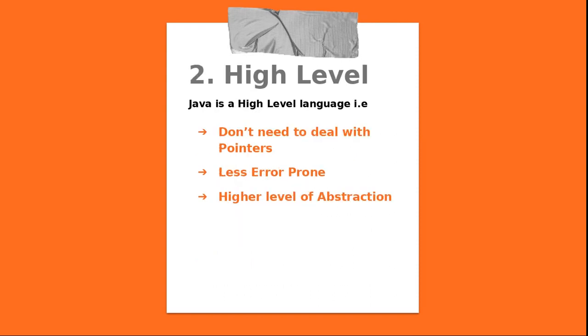The second thing is its high-level nature. Java is a high-level language, which means it's easy to learn. It's not machine language of zeros and ones — it's a high-level language.